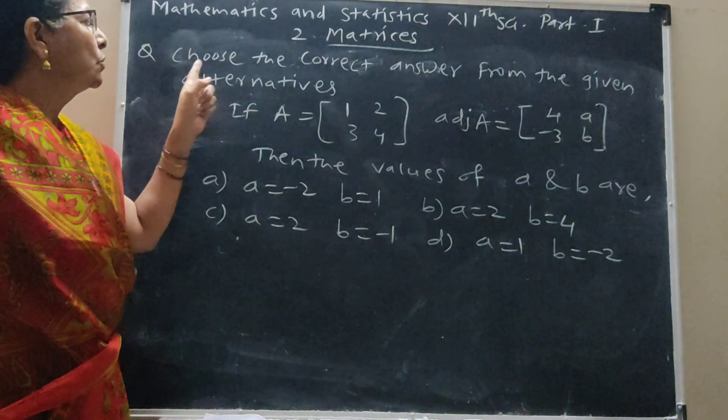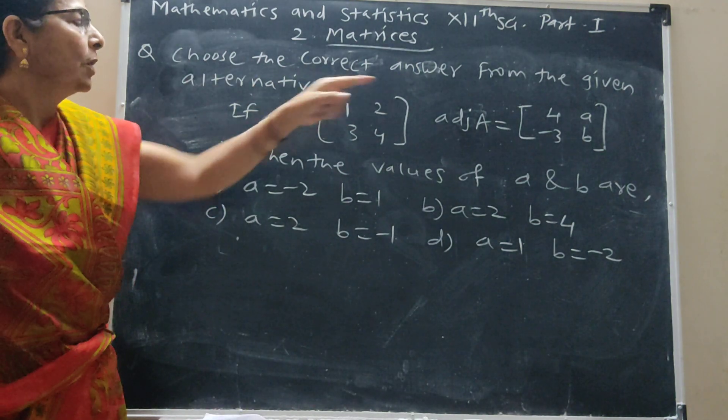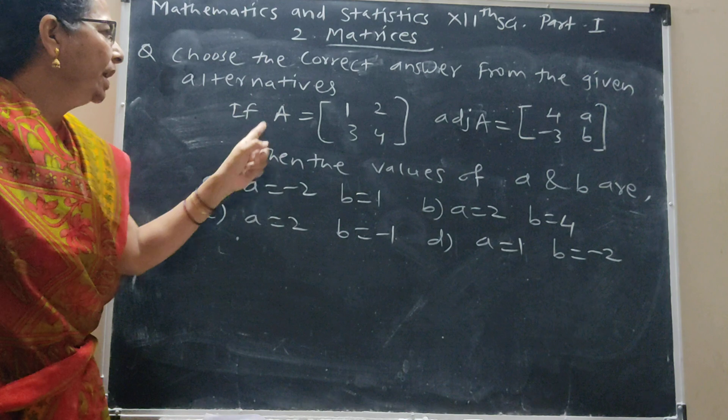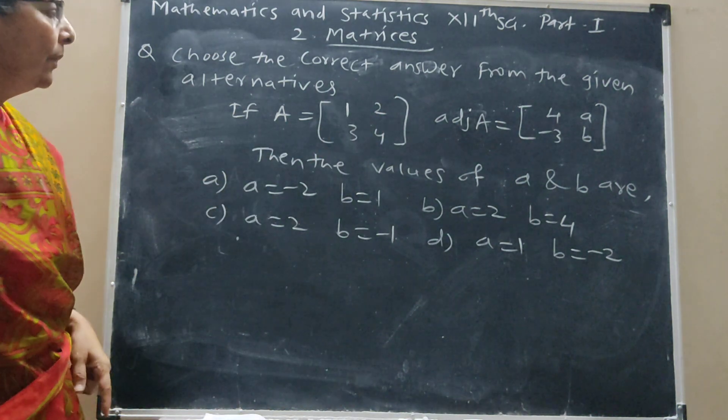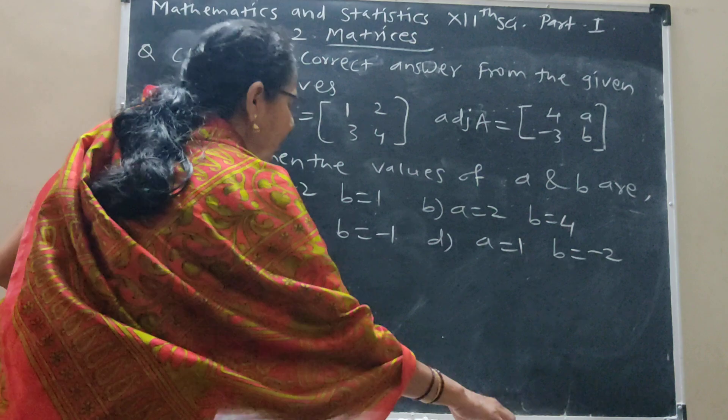Next is question: choose the correct answer from the given alternatives. If A and Adjunct A is given, and alternatives are in this way, find the values of a and b.